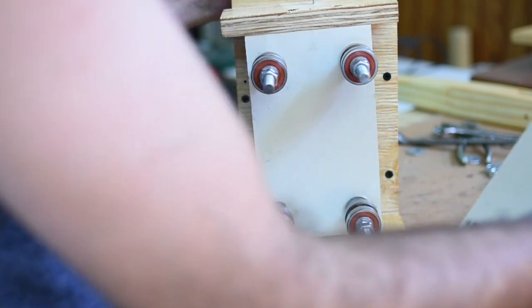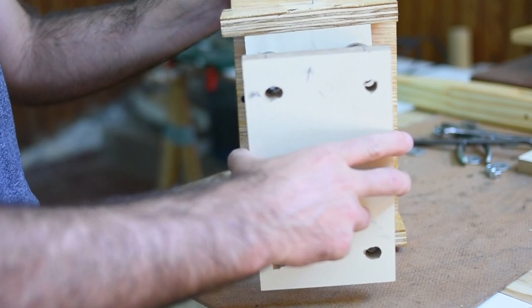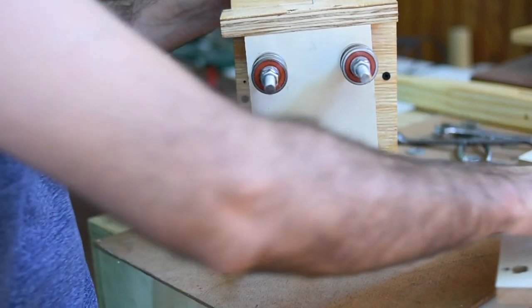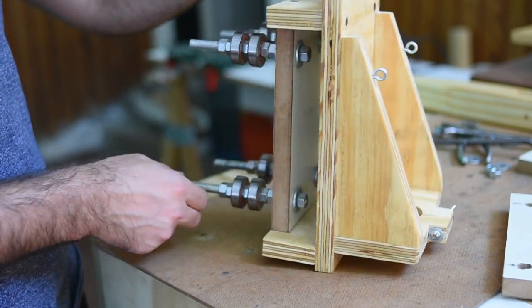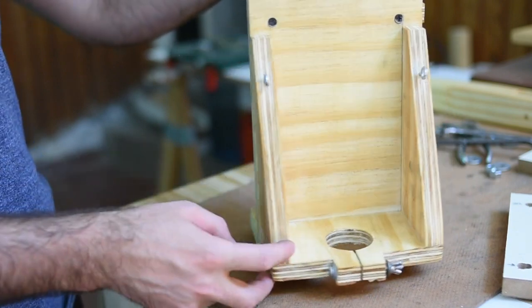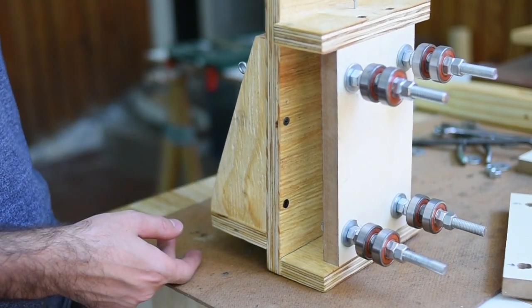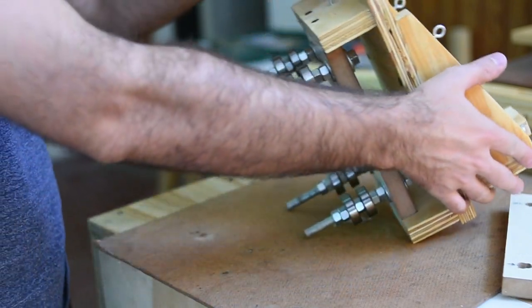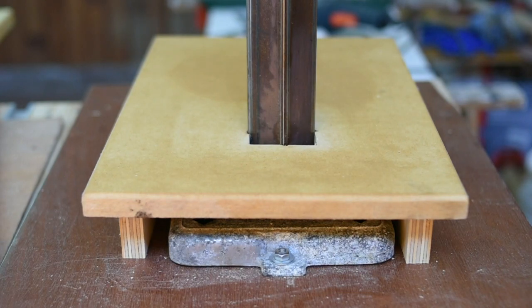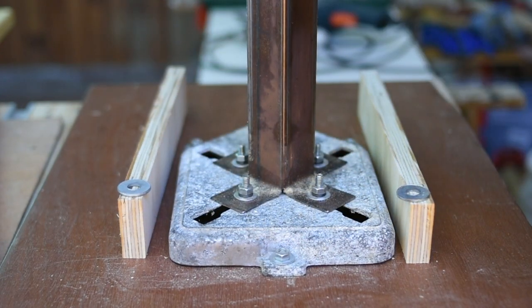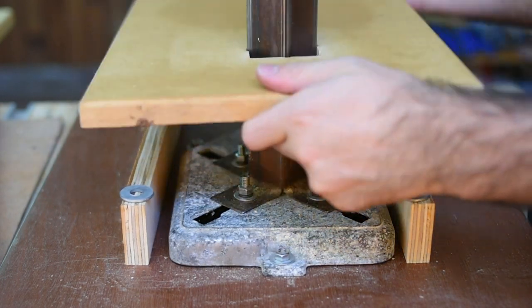Lo que van a ver es que la parte de atrás la hice antes, y después le agregué la parte de adelante para que me quedara centrada, porque si ven, claramente está muy descentrada la parte, pero si la observamos desde frente, está todo perfectamente escuadrado. Por eso hay que hacer por separado la parte que corre y la parte donde va el taladro, y después las unimos y tenemos la parte perfectamente centrada.